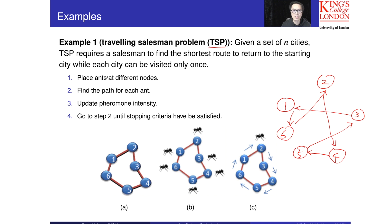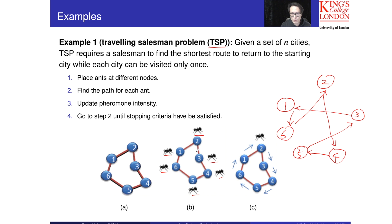When we apply the Ant System or any Ant Colony Optimization, we first place different numbers of ants at different nodes — in this case one ant per node, though you can place more than one ant at any node. Then we run the algorithm and allow each ant to find a complete path.